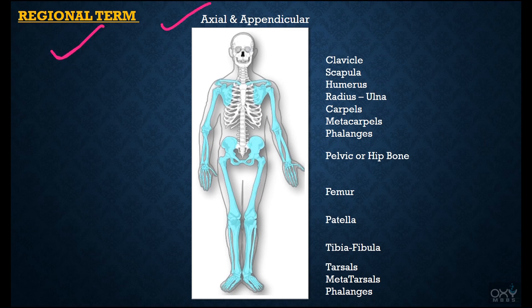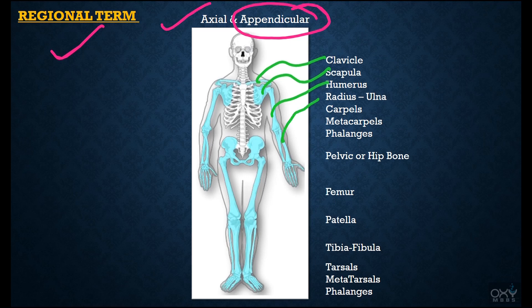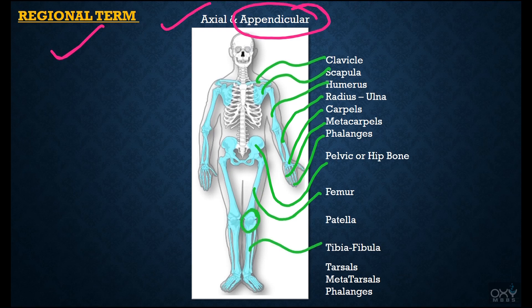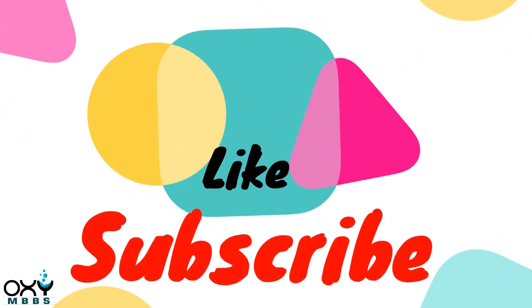Now we have one very important regional term: axial and appendicular. The appendicular region includes the upper limb and the lower limb. The upper limb includes the clavicle, scapula, humerus, radius, ulna, carpals, metacarpals, and phalanges. The lower limb includes the hip or pelvic bone, femur, patella, tibia, fibula, tarsals, metatarsals, and phalanges. The remaining parts of the body form the axial region, which includes the head, neck, thorax, vertebral column, sacrum, and coccyx.